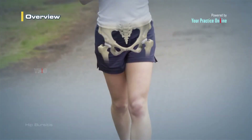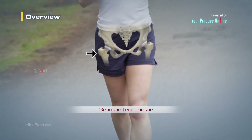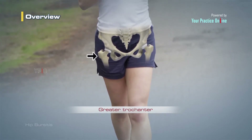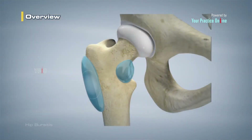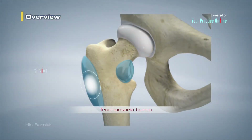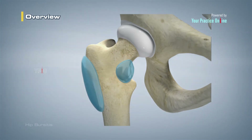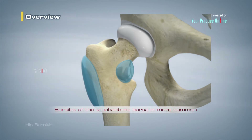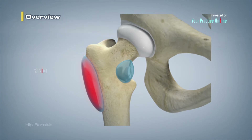The bony prominence of the hip is called the greater trochanter and is present on the outer side of the upper thigh bone, or femur. The bursa overlying it is called the trochanteric bursa. Another bursa is located towards the groin region and is called the iliopsoas bursa. Bursitis of the trochanteric bursa is more common than that of the iliopsoas bursa.